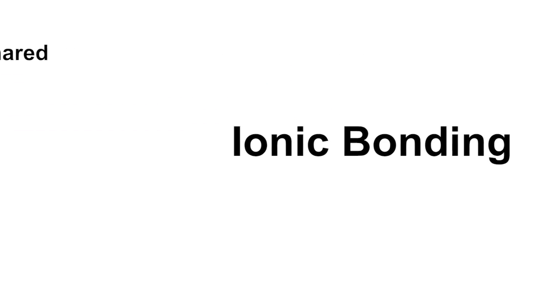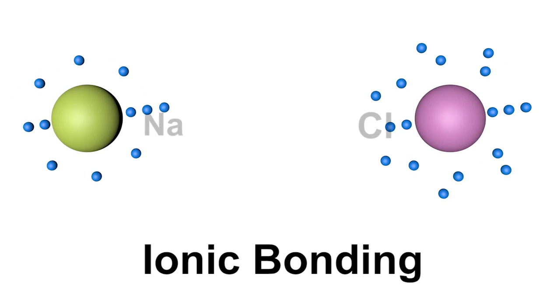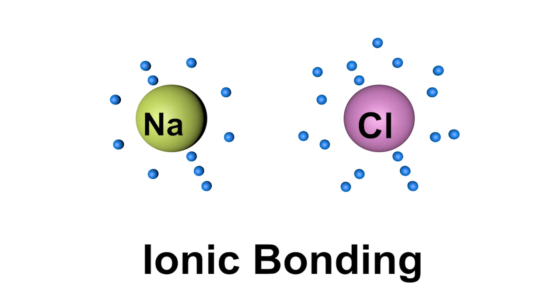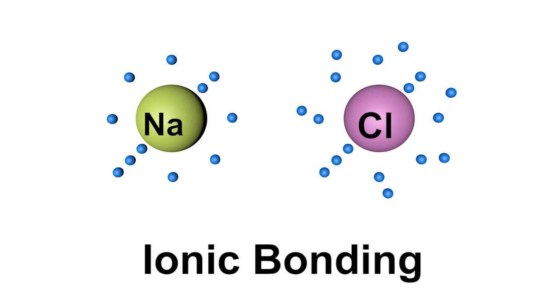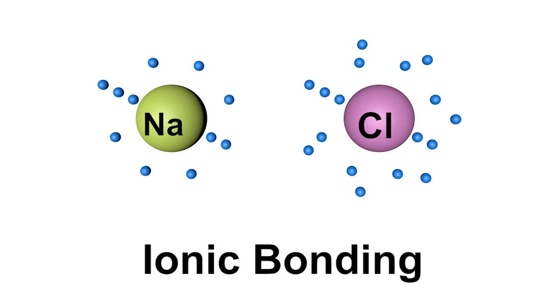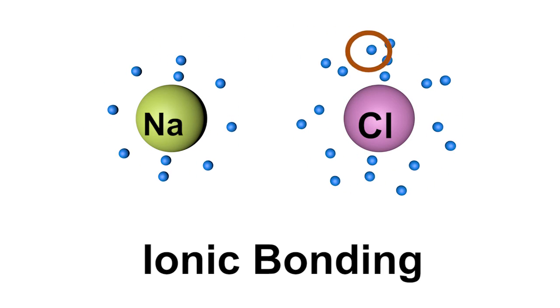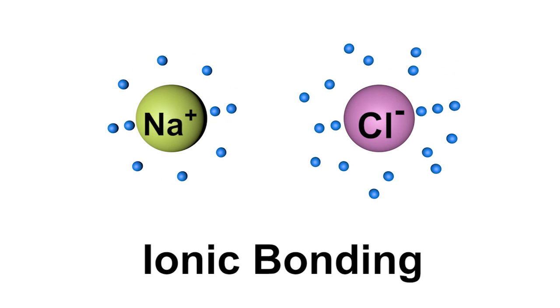Rather than sharing, ionic bonds transfer electrons, either by giving one or taking one. Sodium chloride, NaCl, is a common example. We're all familiar with table salt. The sodium atom gives an electron to the chlorine atom causing an ionic bond to occur, with salt as the product.